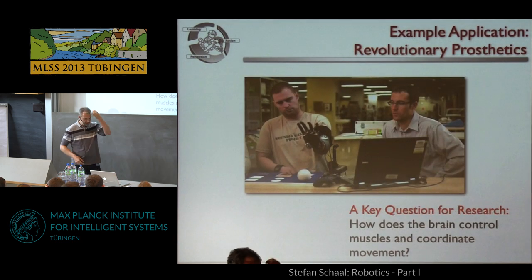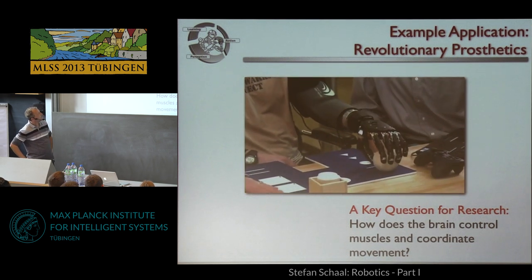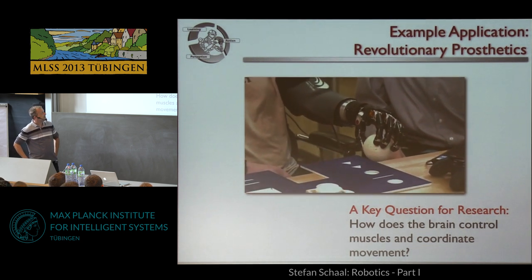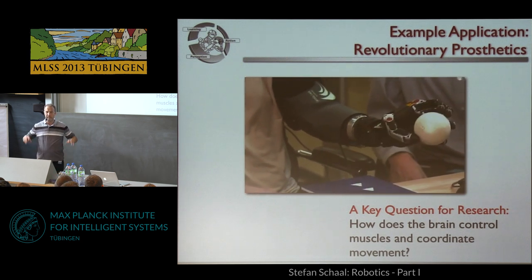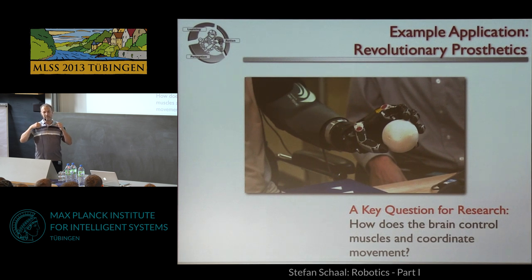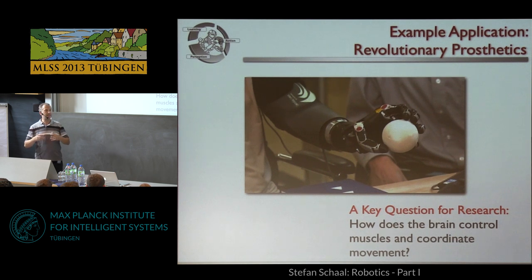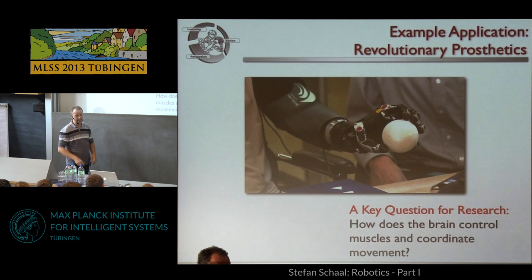There's actually a bigger program in the United States currently going on where people try to create what is called revolutionary prosthetics. Here's an example of a person using a very novel prosthetic arm that is activated through his brain — through remaining brain activity or EMG. Essentially, people reroute some nerves to particular muscles, and the person has to learn how to use those muscle activations to control the arm. This makes progress and it's really cool, though it's far from being fully practical. This is one of those technologies at the border between brain science and robotics.